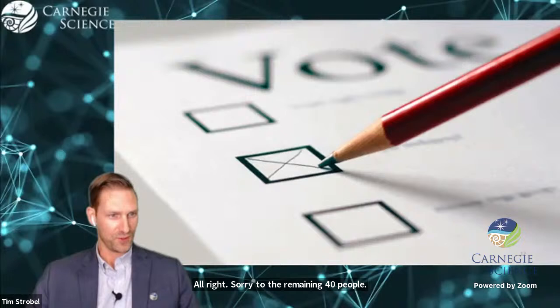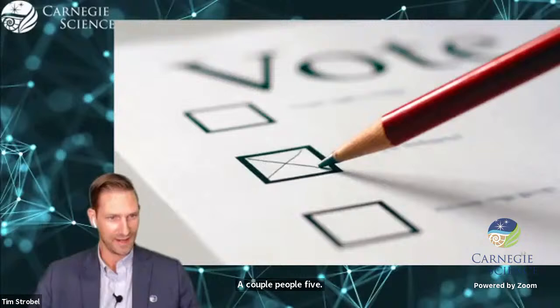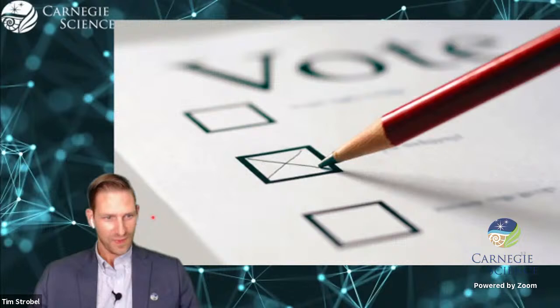You should be able to see the results of the poll now on your screen. A couple people selected zero degrees Celsius, four selected 32 Fahrenheit, and one person selected 273.15. And we have almost a 50-50 split between you can't trick me it's all of the above, and it depends on where you live.